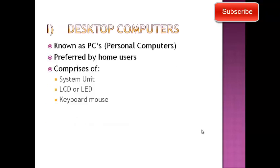Micro Computers ki pehli type Desktop Computer hai — yeh ek aisa Micro Computer hai jo normally aapke gharon aur offices mein use hota hai, isko personal computer bhi kehte hain. Ek desktop computer mein ek system unit hota hai, system box ke andar processor, motherboard, RAMs installed hoti hain, hard drive installed hoti hai. Saath jo parts hote hain unme LCD ya LED use hota hai, aur keyboard aur mouse peripheral devices hain jo instructions dene aur output lene ke liye use hoti hain.